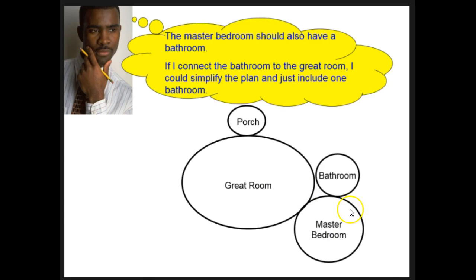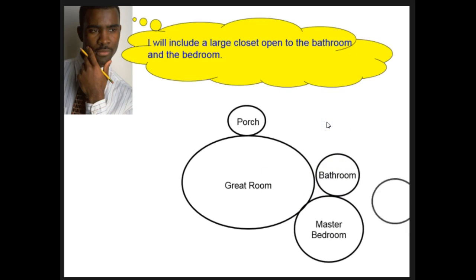So he decides maybe instead of putting it there, he's going to connect it like this. What that's saying is there's a door connecting from the great room into the bathroom and there's another one connecting here. That means that this can be your only bathroom in the house. He said he's going to put a large closet there, and by touching both this and this it shows that it's going to connect to both of those rooms.